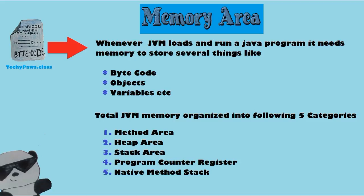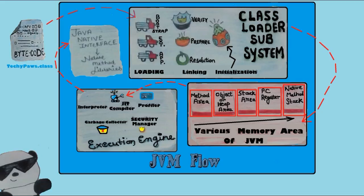Method area and heap area are per JVM, meaning for each JVM there is one heap memory and one method area. But stack area, PC register, and native method stack are per thread — for every thread, one stack area, one PC register, and one native method stack will be created.